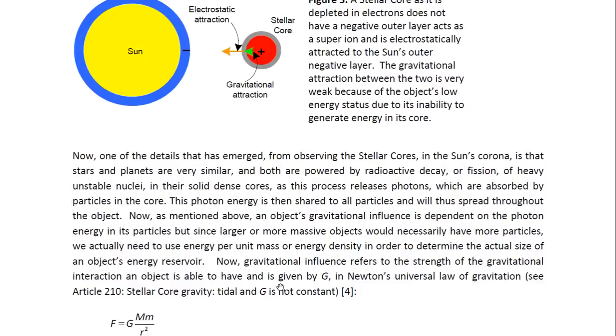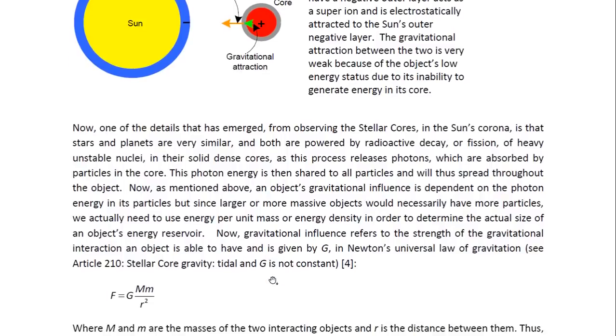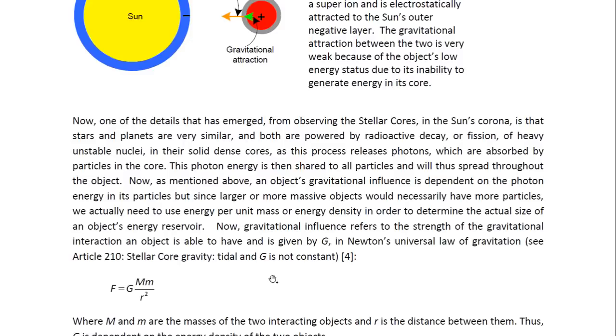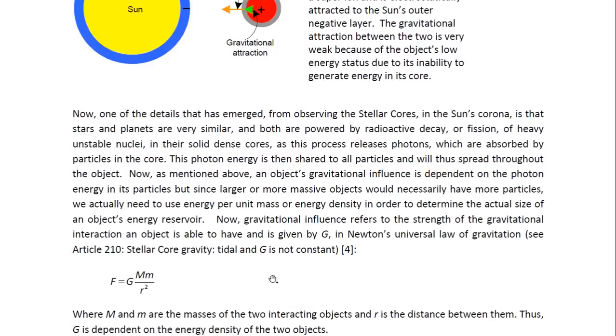Now, as mentioned above, an object's gravitational influence is dependent on the photon energy in its particles. But since larger or more massive objects would necessarily have more particles, we actually need to use energy per unit mass or energy density in order to determine the actual size of an object's energy reservoir. Now, gravitational influence refers to the strength of the gravitational interaction an object is able to have and it's given by G, which appears in Newton's universal law of gravitation. And you may look at article 210 entitled Stellar Core Gravity Tidal and G is not constant.